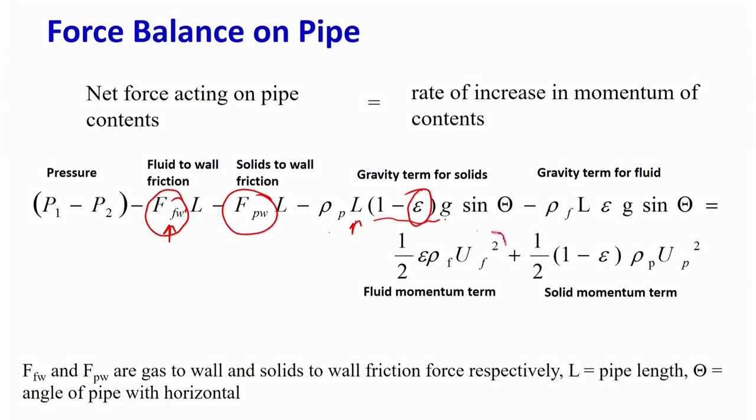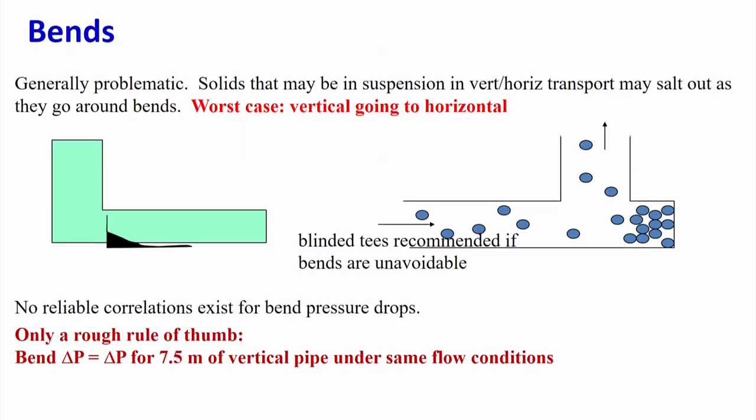If you solve this equation knowing F_pw, F_fw, void fraction, fluid phase velocity, and solid phase velocity, you can calculate how much delta P will occur. Knowing the delta P, you can determine at what pressure the system needs to be operated and what pumping power to supply. That is how one designs a pneumatic conveying system by calculating the delta P. We have said the flow can be dilute or dense. In the dense case, the Stokes number will be more than one — particles will have their own trajectory.